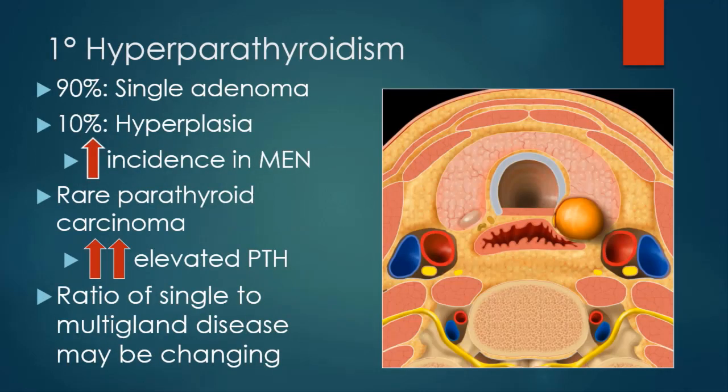The etiology of primary hyperparathyroidism: prior literature showed about 90 percent of those patients harbored a single adenoma. About 10 percent previously had hyperplasia with multiple glandular disease, seen with increased incidence in multiple endocrine neoplasia. Parathyroid carcinoma is a very rare entity, with most patients having markedly elevated parathormone levels. The ratio of single to multi-gland disease does seem to be changing — there appears to be more hyperplasia being seen than in the past.